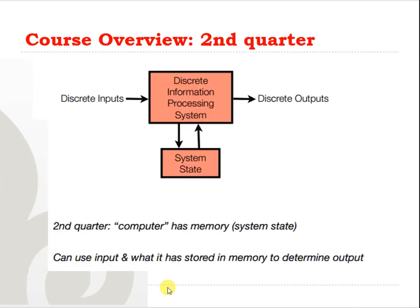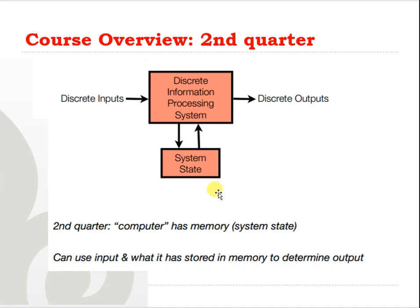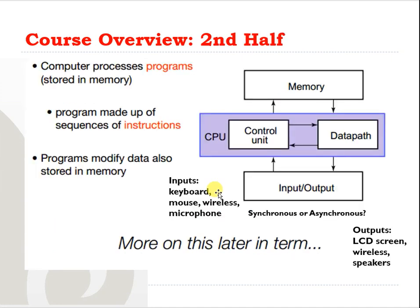We will move towards a complete basic computer, with more details in the second half of the course. For the first half, as mentioned, we will focus on discrete information processing systems without and then with system state. Then we will move forward and see how programs are constructed, how instructions are made, how data is exchanged between memory and the CPU, and how the control unit performs processing on data using the datapath. All those details will be provided later. That's all for this video — thank you for watching and see you in the next video soon. Bye for now.